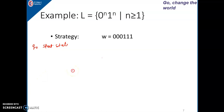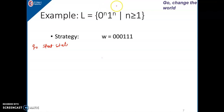In this video lecture, I will explain how to construct a Turing machine for the given language. The language accepted by the Turing machine should have n number of zeros followed by n number of ones.